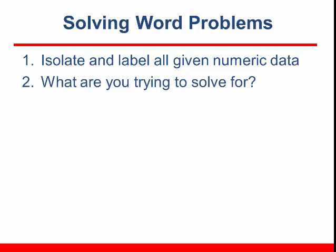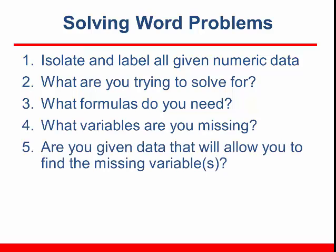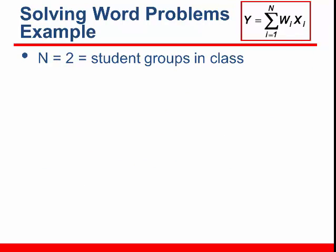Identify what you're trying to solve for. What formulas do you need? Are you missing any needed variables? Will the given data allow you to find those missing variables? And finally, do not forget order of operations. Here's an example of a very simple word problem. A class of 25 students took a science test. Ten students had an arithmetic average score of 80. The other students had an average score of 60. What's the average score of the whole class?